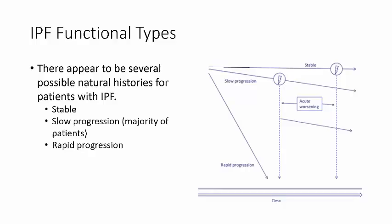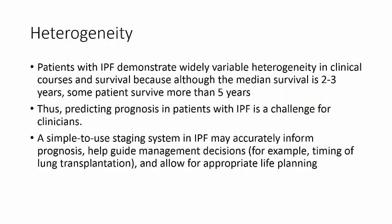There are different phenotypes of IPF with several possible natural histories. Some patients remain stable after diagnosis. The majority experience slow progression with a steady decline in functional status over the years. Others have rapid progression, perhaps due to an acute exacerbation, leading to much shorter time to mortality. Because of this heterogeneity, predicting prognosis in IPF was a challenge for clinicians — it was difficult to know if a patient would be the rapid progressor or the stable one.